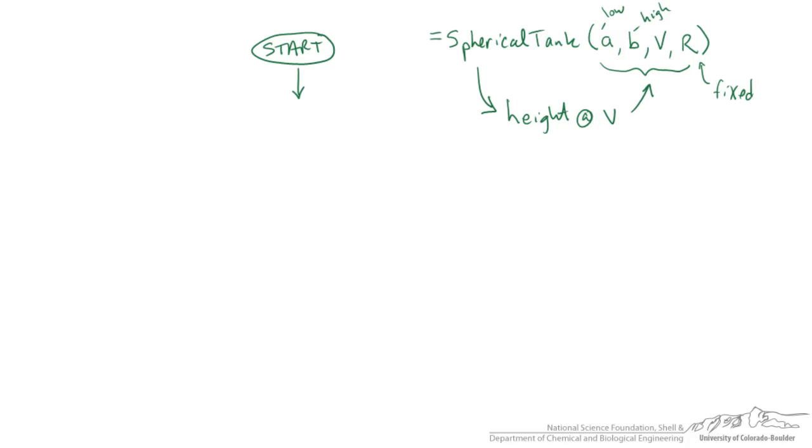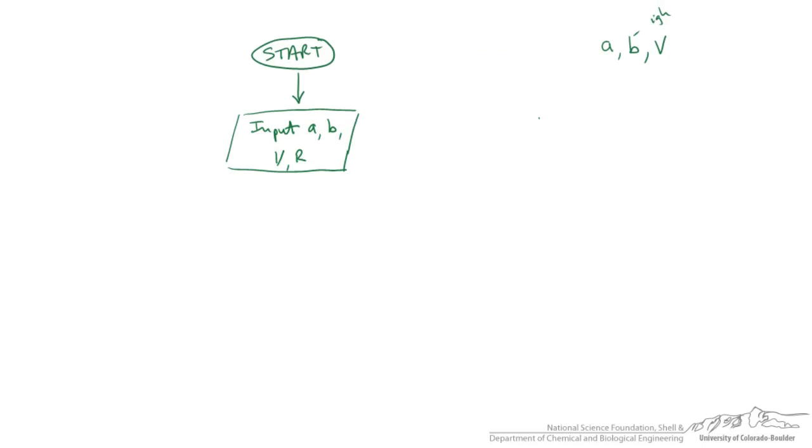We're going to start and the user is going to input the function A, B, V, and R. The next thing that's going to happen is I'm going to first start out with a low. A low value is going to equal A. A and B are in feet and H's are all going to be in meters.